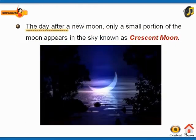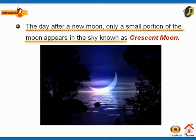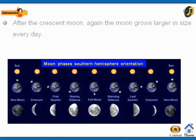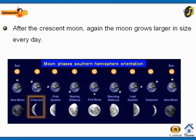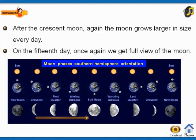The day after a new moon, only a small portion of the moon appears in the sky, known as the crescent moon. After the crescent moon, the moon grows larger in size every day. On the fifteenth day, once again we get a full view of the moon.